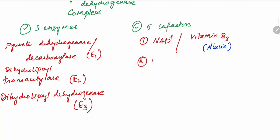The second cofactor is FAD. The coenzyme is vitamin B2, also called riboflavin.